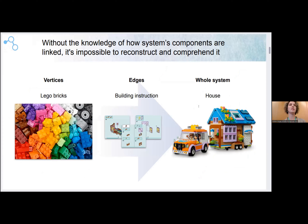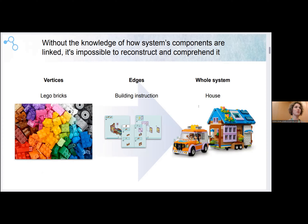A lot of projects aim to study genes of aging separately, but of course there is a very good example with Lego bricks — if you even have a very detailed description for each brick, you will never comprehend the system, how it works, the dynamics of the system without knowing the instruction, the building instruction. And the same is with aging genes: we really need to know the connections between these genes to get information about the aging and the dynamics of the aging process.